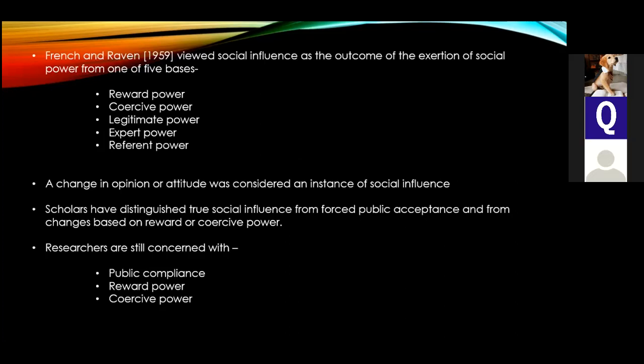French and Raven in 1959 viewed social influence as the outcome of the exertion of social power from one of five bases. According to our textbook there are five powers, but there is actually a sixth one as well. The five mentioned in the textbook are reward power, coercive power, legitimate power, referent power, and expert power. Apart from these there is also informational power.